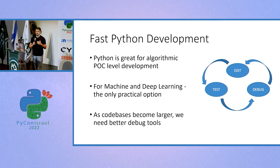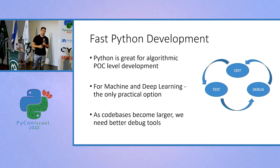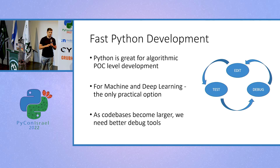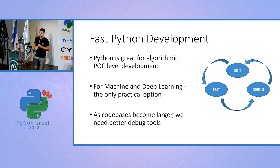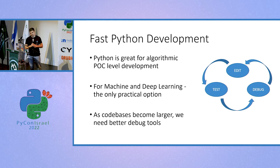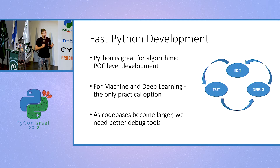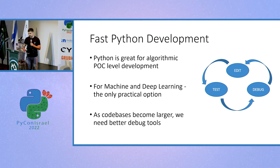Nowadays we write a lot of Python code. It's no longer a scripting language. I use Python for machine learning and deep learning — there is a huge ecosystem in Python for that. There are huge codebases written in Python, and when those codebases become large, we need to start thinking about Python as a tool to write big software involving multiple developers on one project.